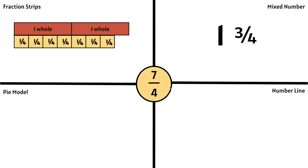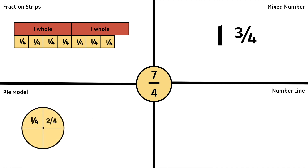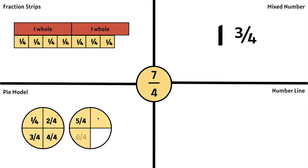Let's use a pie model. Remember we have 7 fourths. Let's make a pie with 4 equal parts and count: 1 fourth, 2 fourths, 3 fourths, 4 fourths makes 1 whole pie. And we need 7 fourths, so let's keep counting: 5 fourths, 6 fourths, 7 fourths. We notice that 7 fourths makes 1 whole and 3 more fourths — so 1 and 1, 2, 3 fourths of another whole.